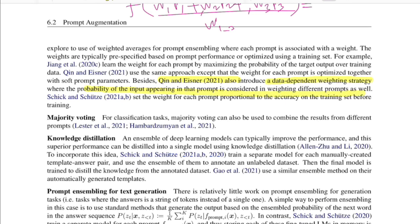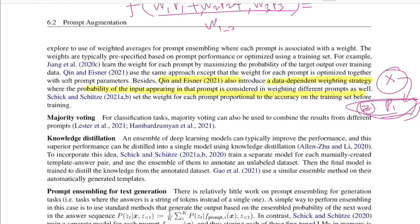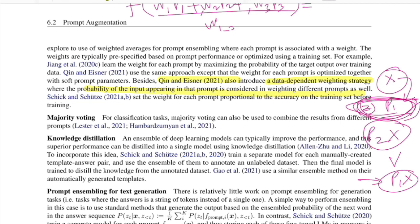Quinn and Isner introduced a data-dependent weighting strategy where the probability of an input appearing in the prompt is used as its weight. If you fill prompt p1's slot with input x and get a high language model score, that means the structure likely exists in training data. Conversely, if input x in template p2 is absurd and yields a lower score, the lower the score, the better the weight for that template.